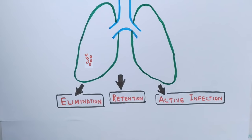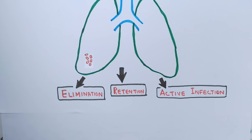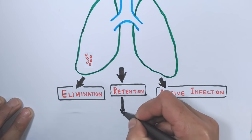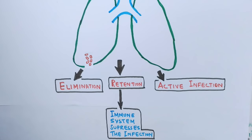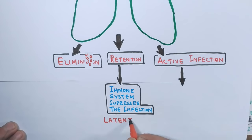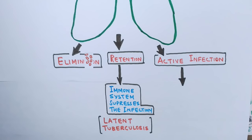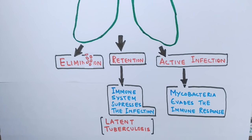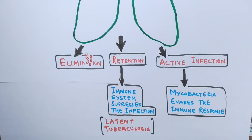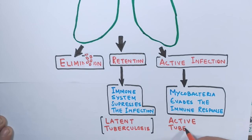In the elimination phase, our immune system completely eliminates the infection. In the retention case, the immune system suppresses the infection but the bacteria remains viable — this is called latent tuberculosis, which is mostly asymptomatic. In the active phase, the mycobacterium evades the immune response and spreads the infection in the lung tissue, and this is called active tuberculosis.